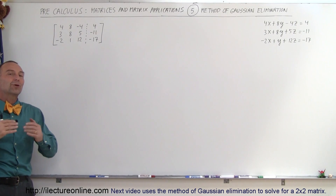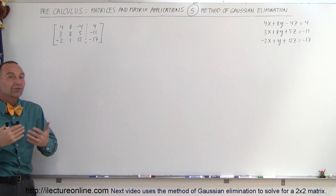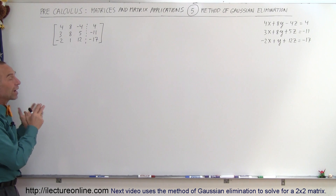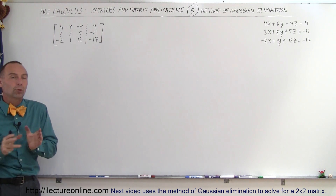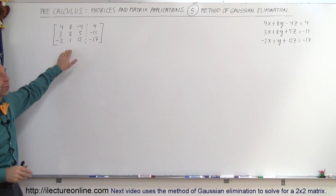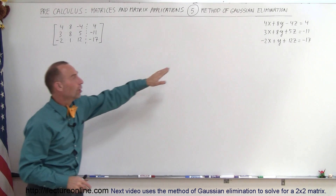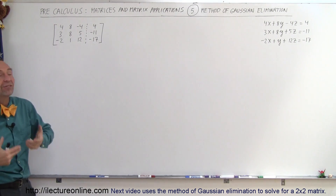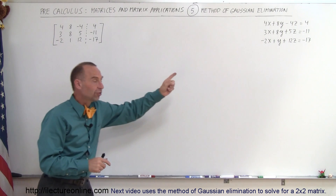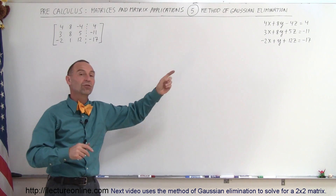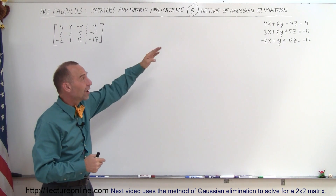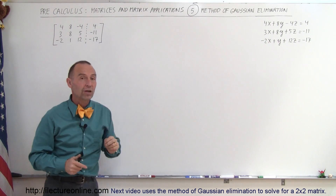Welcome to our lecture. We're going to use the Gaussian method of elimination to find the row echelon form or the reduced row echelon form of this matrix, which is a representation of three equations forming a system of linear equations. We're trying to solve that system by looking for the values of x, y, and z that satisfy all three equations.